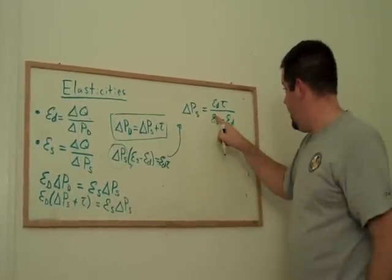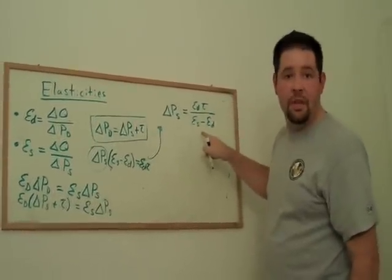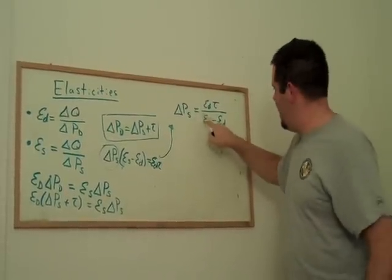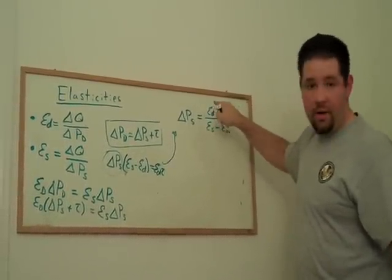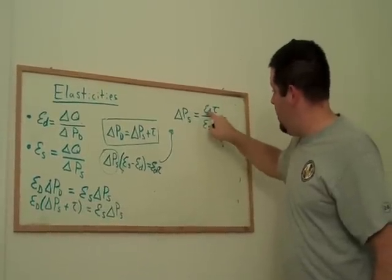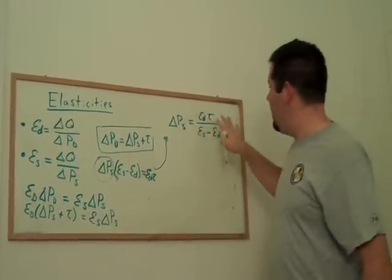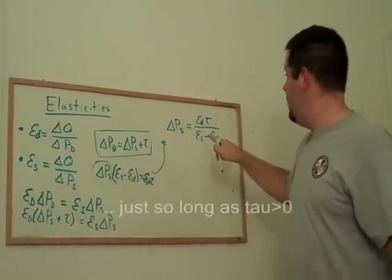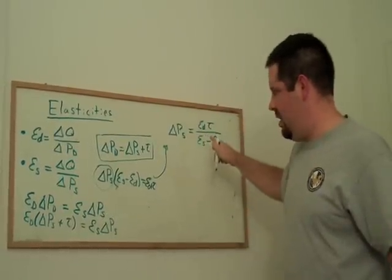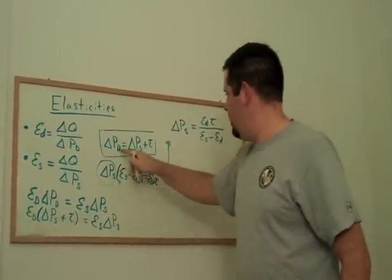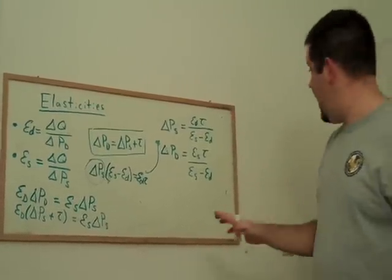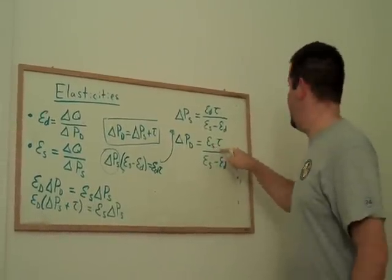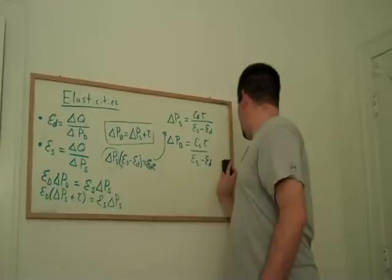Now, one thing that you'll notice is that this denominator is positive. Elasticity of demand is negative. Elasticity of supply is positive. So, it's going to be a positive number. The numerator up here, on the other hand, is going to be negative. And so, what we'll have is we'll have a negative change in the percentage change in the price. Now, we can go ahead and plug this equation back in to here. But instead of the elasticity of demand in the numerator, we get the elasticity of supply in the numerator.